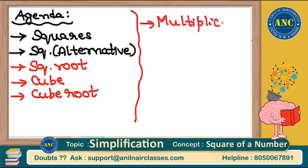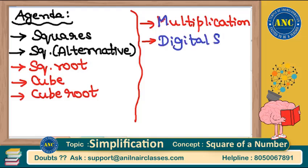How to multiply any two numbers, how to multiply two numbers which are closer to each other, how to multiply two numbers which are nearer to 10 power k, how to multiply numbers by series of ones — there are multiple varieties. We will also learn a beautiful technique called digital sum.